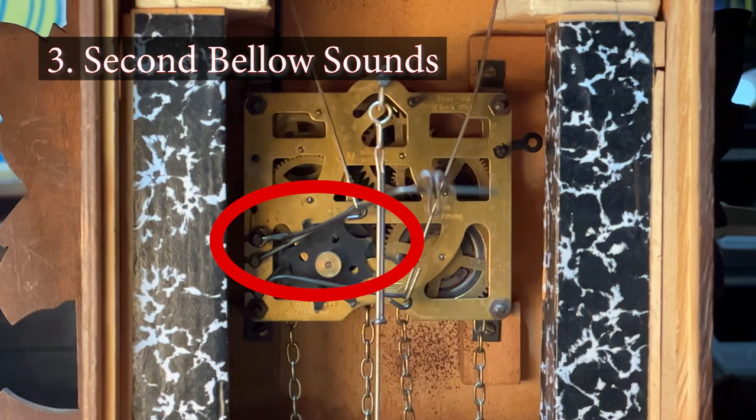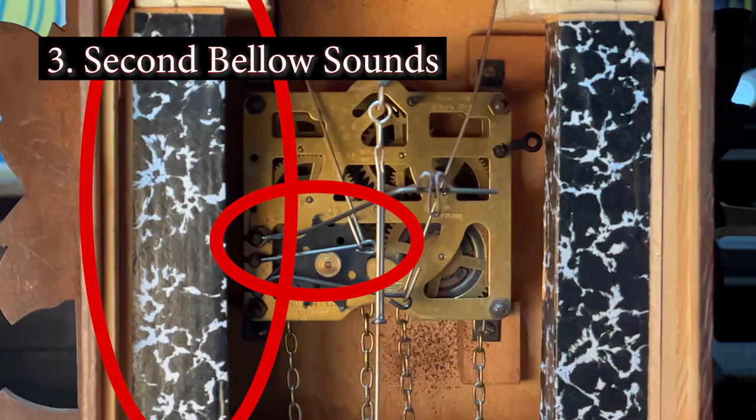Finally, you have the upper lever that is attached to the bellow on the left side which produces the second and lower tone of the cuckoo, as well as creating the bird bobbing effect using a small wire attached to the top of the bellow.